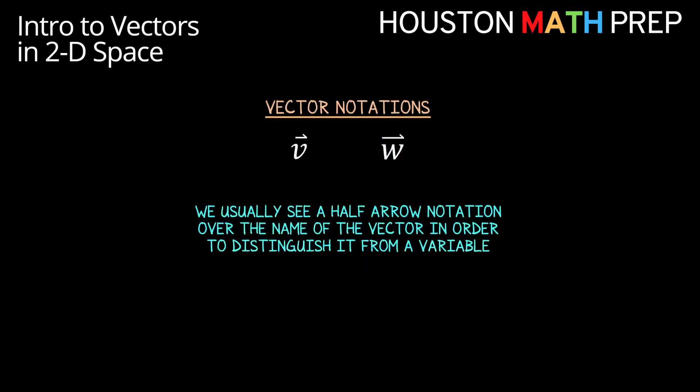The way we know that we're talking about vectors here with V and W that are shown is this half-arrow notation over the name of the vector. Many people use a full arrow instead. That tells us that we're not talking about a variable V or W that we might solve for a specific value like in algebra. This reminds us that these are vectors and they have a list of quantities in them. These are a very different kind of object than just what we think of as a variable.